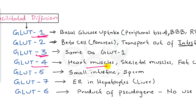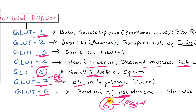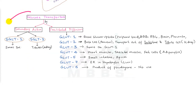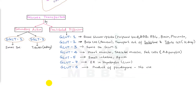GLUT4 is present in heart muscles, skeletal muscles, and fat cells or adipocytes. GLUT5 is in the small intestine for fructose uptake and in the sperm. GLUT7 is in the endoplasmic reticulum of hepatocytes — derived from ER coding (3+4=7). GLUT6 is a product of a pseudo gene and therefore has no functional use. These are all the glucose transporters you need to remember for your PG entrance examination. You can take a snapshot of this final list.